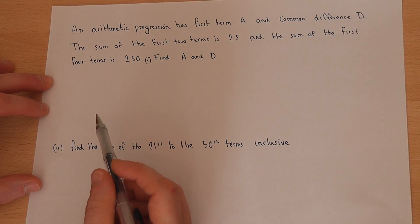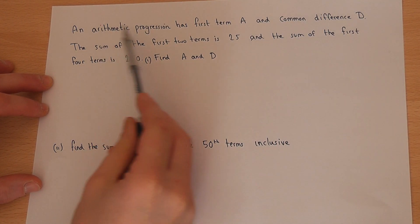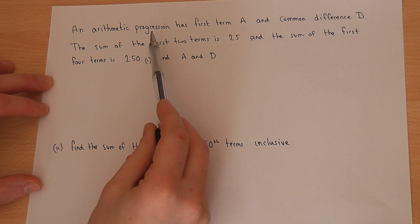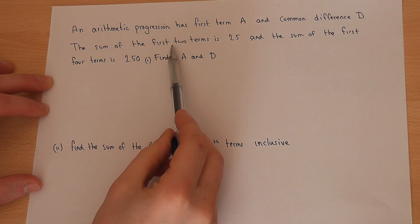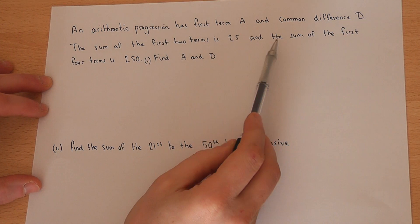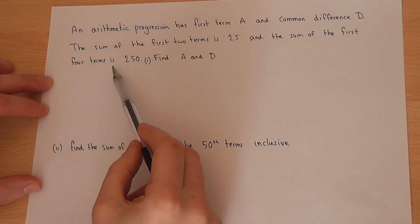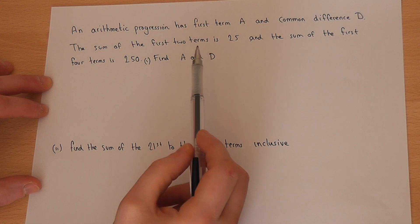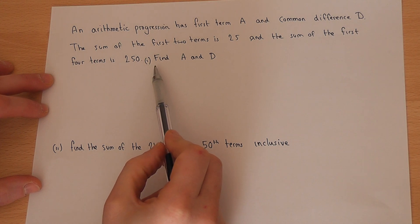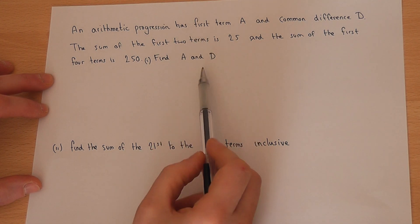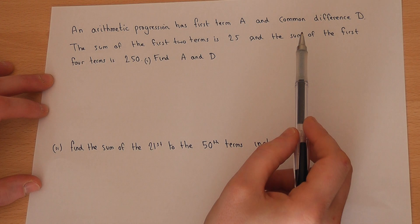This question is a slightly fiddly question involving an arithmetic progression. We're told that the sum of the first two terms is 25, and the sum of the first four terms is 250. In part one we're asked to find a, the first term, and d, the common difference.